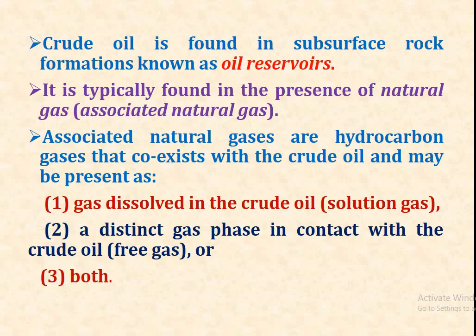Crude oil is found in subsurface rock formations known as oil reservoirs. It is typically found in the presence of natural gas, or associated natural gas. Associated natural gas are hydrocarbon gases that coexist with crude oil and may be present as gas dissolved in the crude oil — in the form of solution gas — or as a distinct gas phase in contact with the crude oil in the form of free gas, or in both conditions.